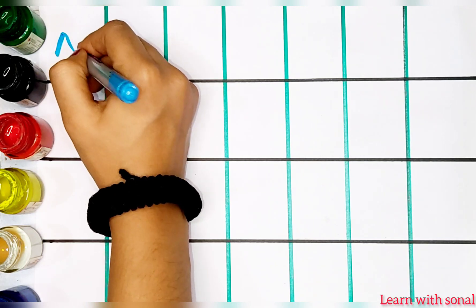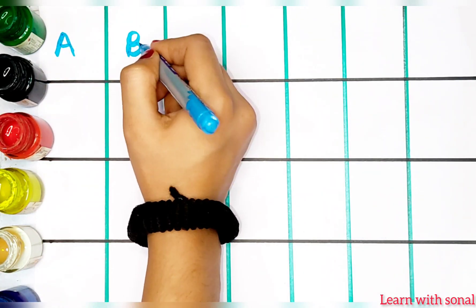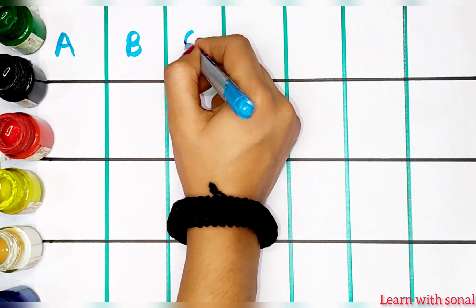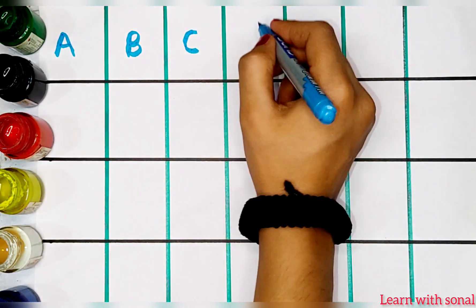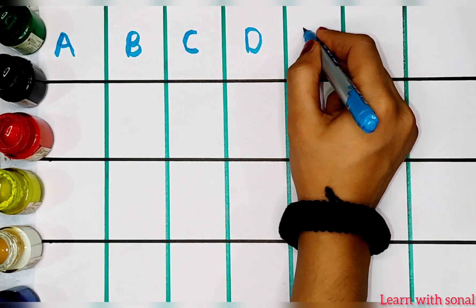A. A for apple. B. B for basketball. C. C for cake. D. D for duck.